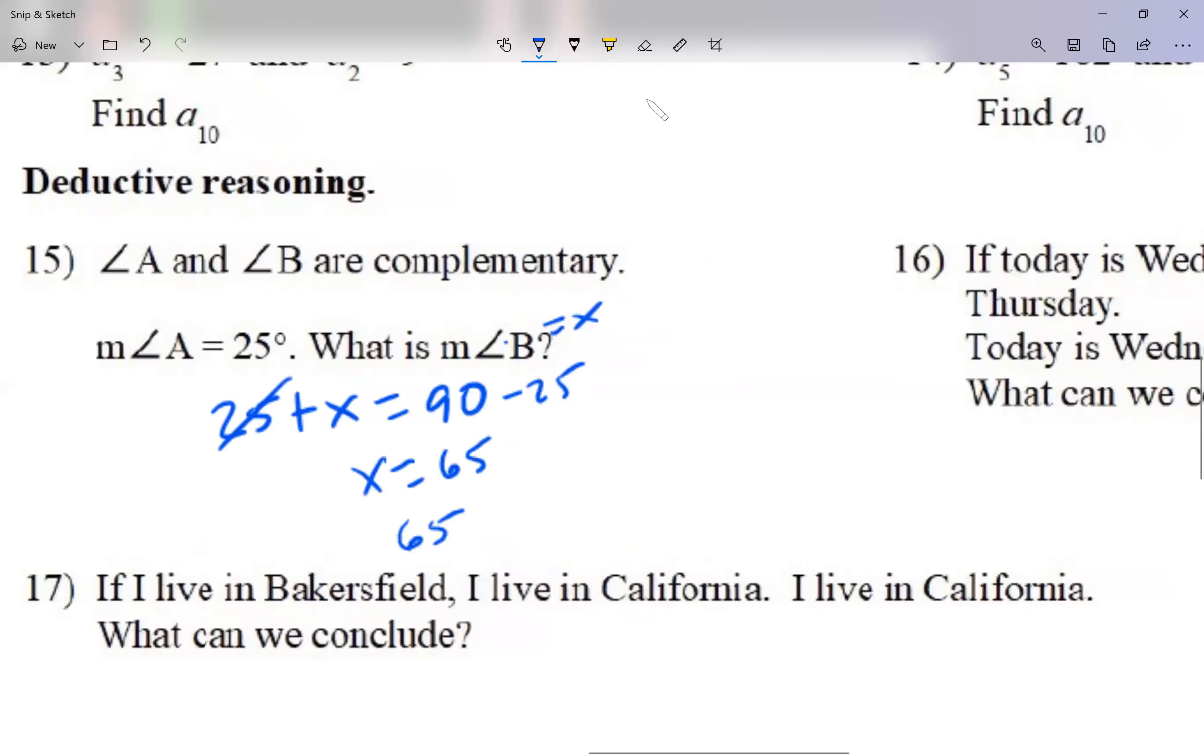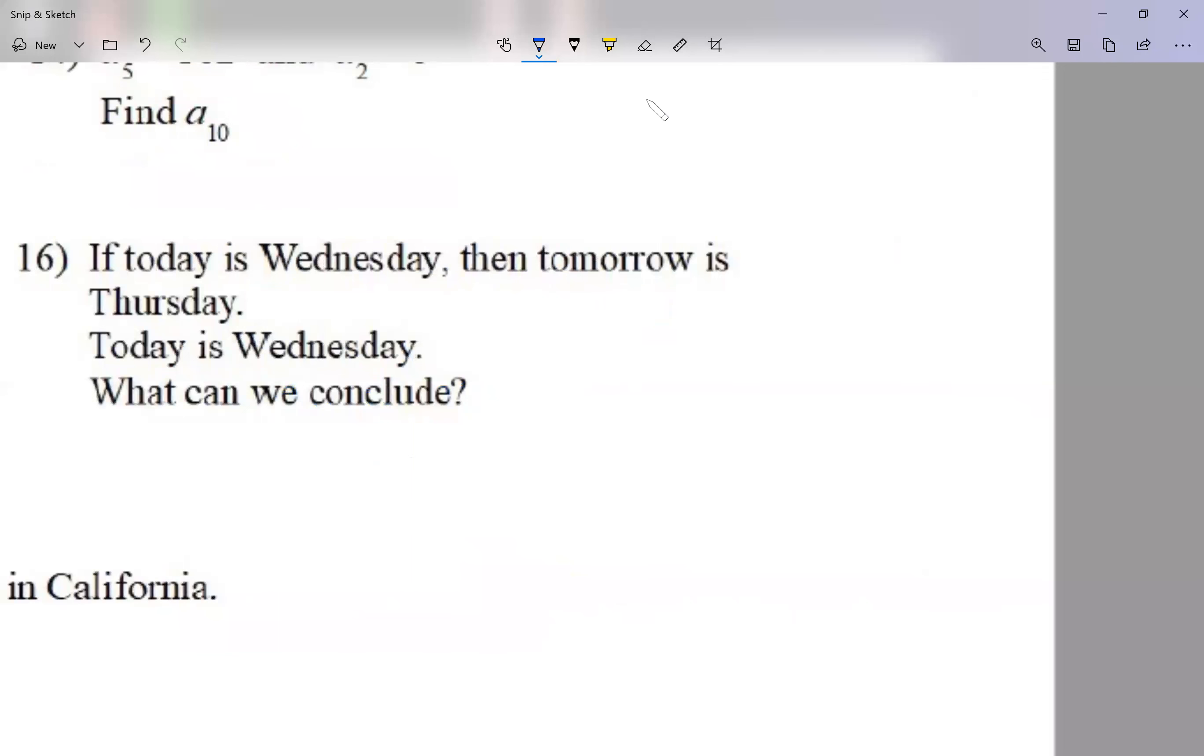Take a look at number 16. If today's Wednesday, then tomorrow's Thursday. Now here we're going to use what we call conditional statements. Some people call it the if and the then statements. There's an if part and there's a then part. So that's what we call the if and then, or conditional statements. Now for deductive reasoning, the first part, the if part, we usually call that hypothesis. You guys have heard that word in your science class. The then part, we call that the conclusion.